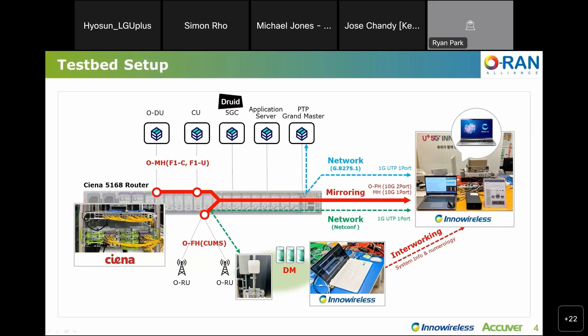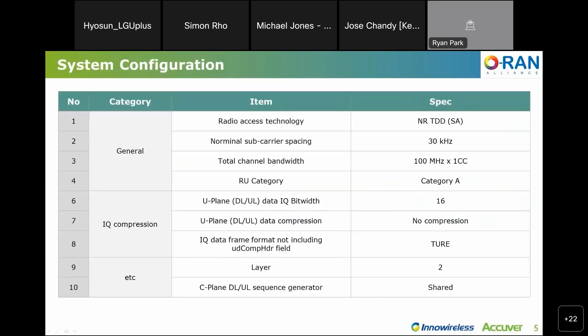AIS provided a wireless environment through radio signal attenuation and fading. This is a system configuration description for our test environment. This table shows the parameter setting values between RU and DU.